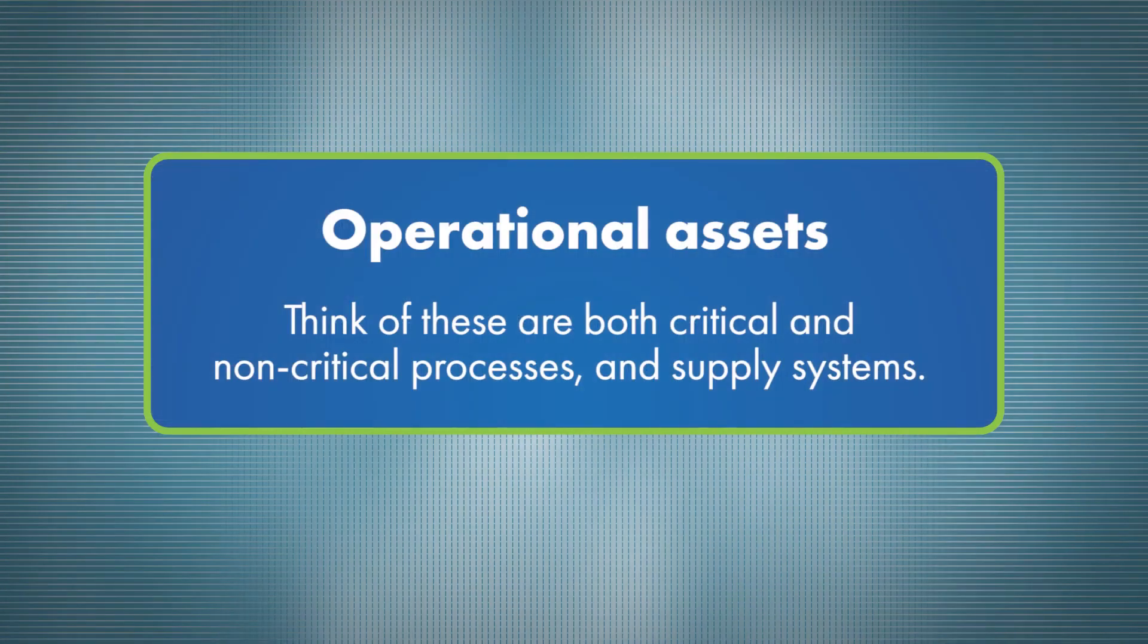Number four, operational assets. Think of these as both critical and non-critical processes and supply systems. Often these are valuable assets that are usually the backbone to productivity.